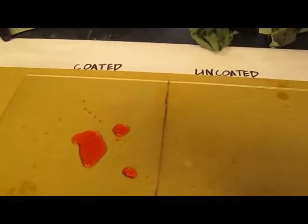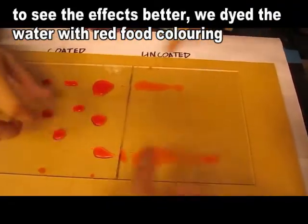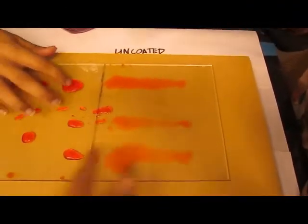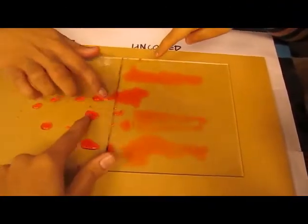As the water rolled down the self-cleaning glass, it took the dust and dirt on the glass along with it. On normal glass however, the water stuck to the surface, trapping the dirt and grime with it.